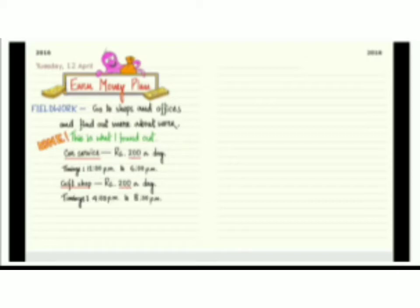Tuesday, 12th April. Field work: go to shops and offices and find out more about work. Done. This is what I found out. Car service: Rupees 100 a day, timings 12pm to 6pm. Gift shop: Rupees 100 a day, timings 4pm to 8pm. NGO school: Rupees 0, anytime in the evening. Most definitely will do later, but need money now.